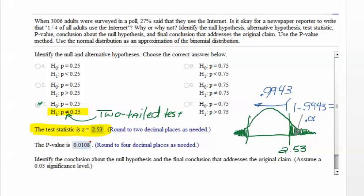How do I find the area shaded in this tail? I subtract this number from one point nine nine four three and that's going to give me point zero zero five seven. That would potentially be my p-value if this was a one-tailed test. Now do not round this to point zero zero six.